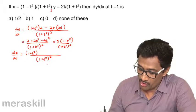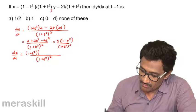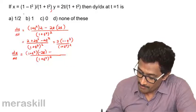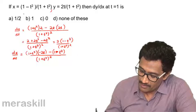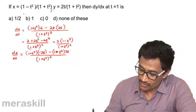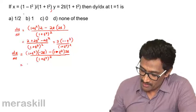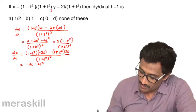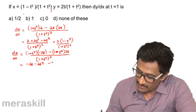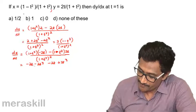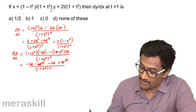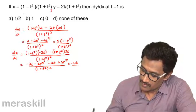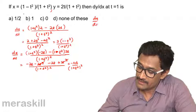Now dx/dt using the quotient rule: numerator is (1 + t²)·(-2t) - (1 - t²)·(2t) = -2t - 2t³ - 2t + 2t³ = -4t. So dx/dt = -4t / (1 + t²)².